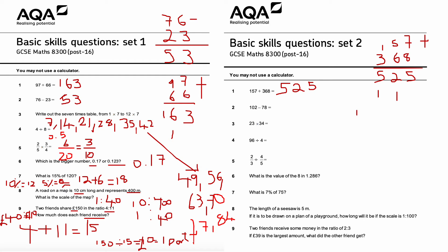Question two: 102 take away 78. Using column subtraction — being very careful. 2 take away 8, I can't do, so I have to borrow. I can't borrow from the tens (it's zero), so I borrow from the hundreds: that becomes a zero, making the tens a 10, then I exchange again giving a 9 and a 12. 12 take away 8 is 4, 9 take away 7 is 2, and 0 take away nothing is 0. So the answer is 24.